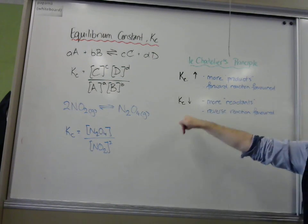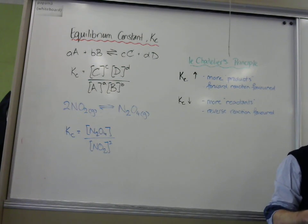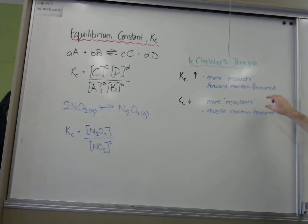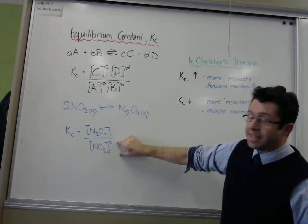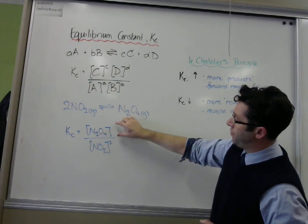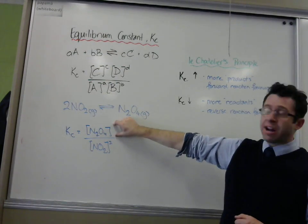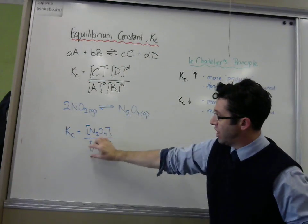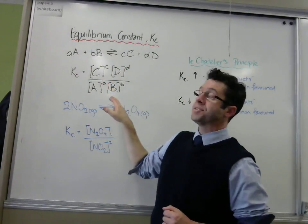If the Kc value drops when you change something, then it means you've got more reactants, because it means the number on the bottom must be bigger. Which means there must be smaller concentration of products and a bigger concentration of reactants.